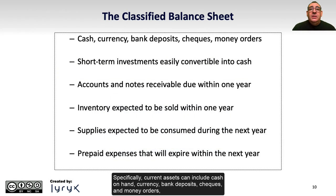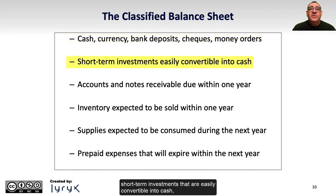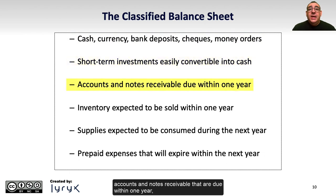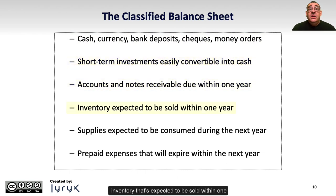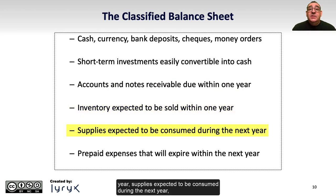Specifically, current assets can include cash on hand, currency, bank deposits, checks, and money orders; short-term investments that are easily convertible into cash; accounts and notes receivable that are due within one year; inventory that is expected to be sold within one year; supplies expected to be consumed during the next year; and prepaid expenses that will expire within the next year.